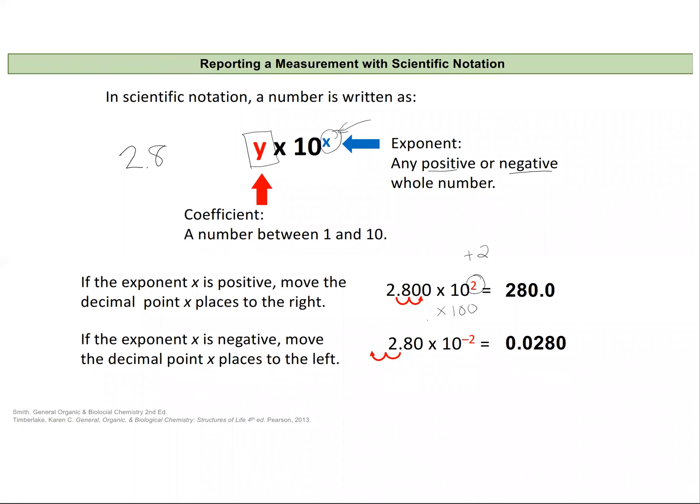An easy way to think about this, rather than the exponent multiplying out the 10's value, is just to move this decimal place right here over two places. So we would end up with a number like 280.0.